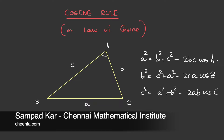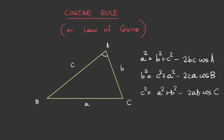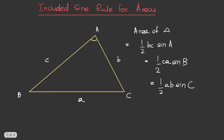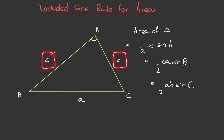Now that we know about the cosine rule, we will move on to one more theorem which will help us in the upcoming problem. This is the included sine rule for areas. This theorem gives us the area of a triangle given the length of its two sides and the included angle. It says that the area of a triangle is half·BC·sinA, or half·CA·sinB, or half·AB·sinC. The proof of this is very simple; I will just give one way to prove this.